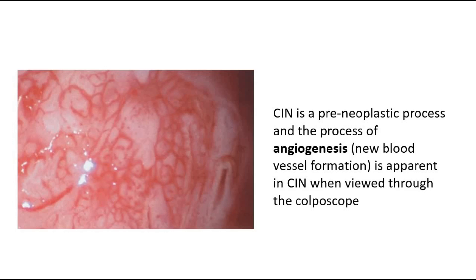There is a process of angiogenesis — new blood vessel formation — that can be seen through the colposcope. This picture shows angiogenesis, which is the abnormal vascularity that we need to look for during colposcopy.